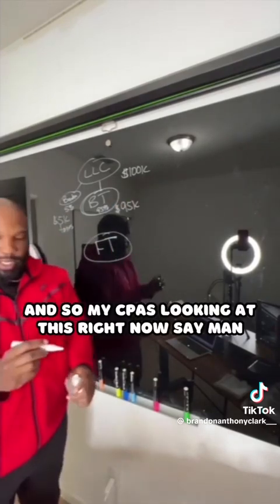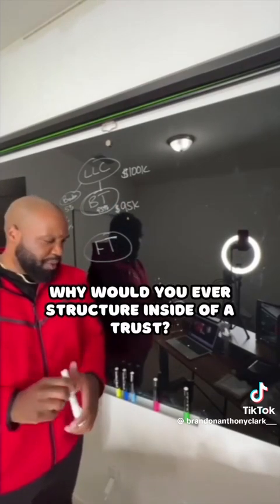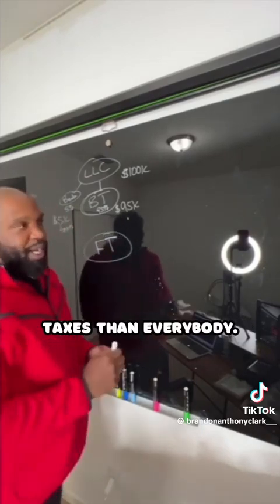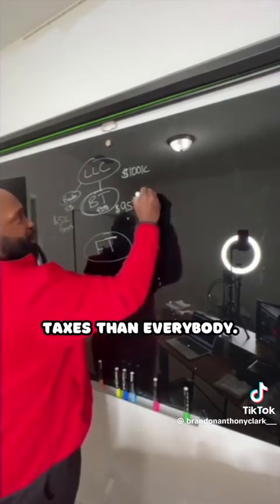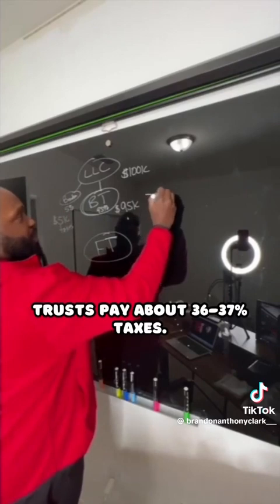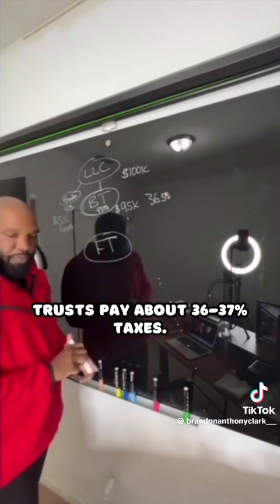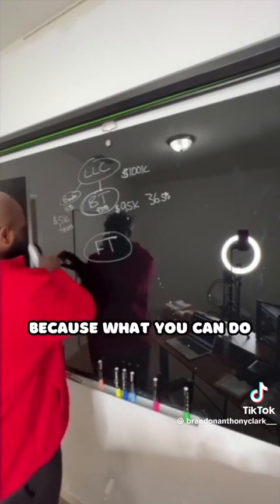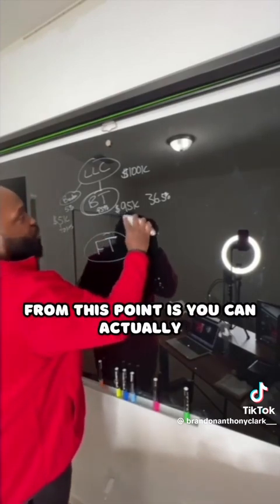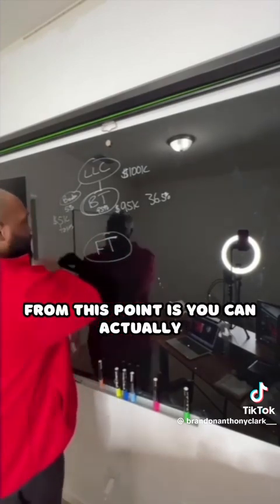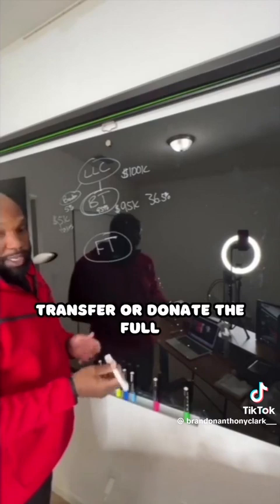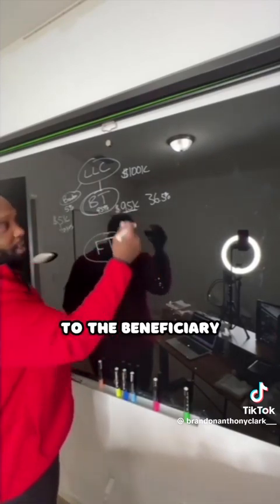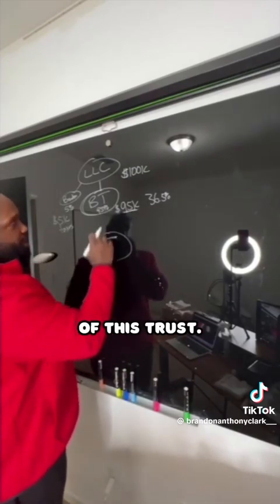My CPA looking at this right now would say, why would you have a structure inside of a trust? Because trusts pay higher taxes than everybody — trusts pay about 36 to 37% taxes. And so that's where the strategy comes in, because what you could do from this point is actually transfer or donate the full $95,000 to the beneficiary of this trust.